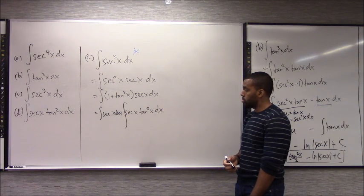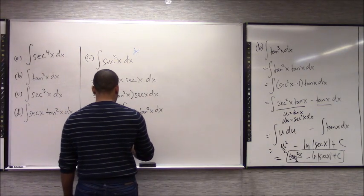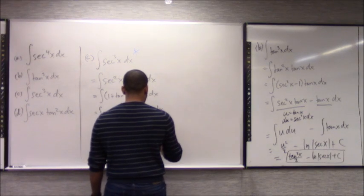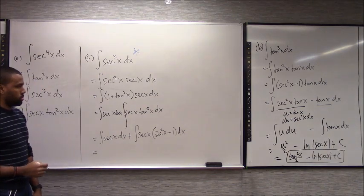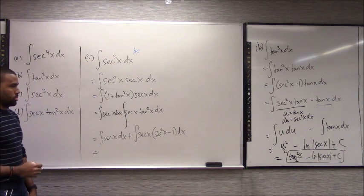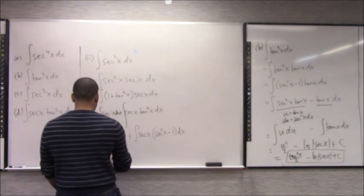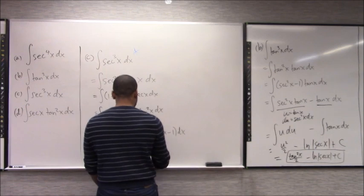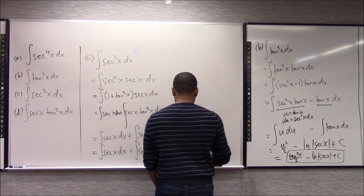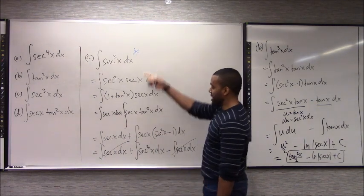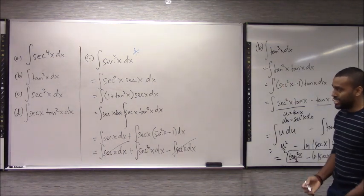Or: tangent squared x equals secant squared x minus 1. We have secant times secant squared minus 1 dx, which gives secant cubed x minus secant x. Secant cubed is secant cubed — well, technically you're not wrong, but you didn't actually do what you're supposed to do. That doesn't work.